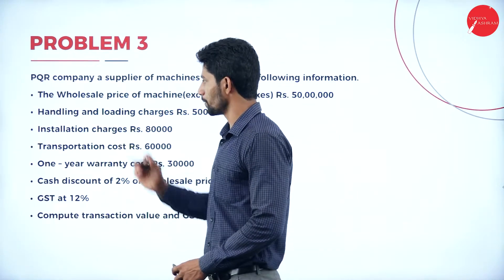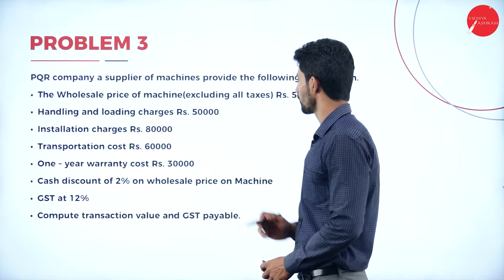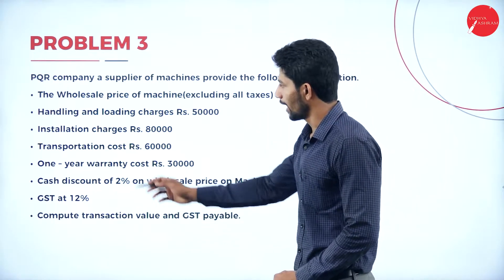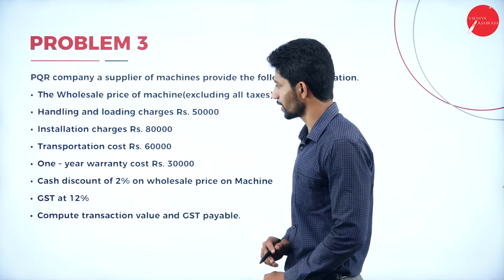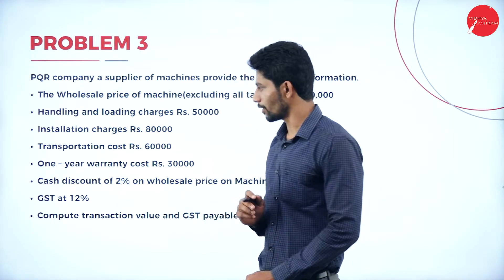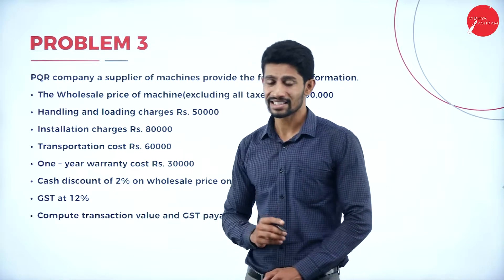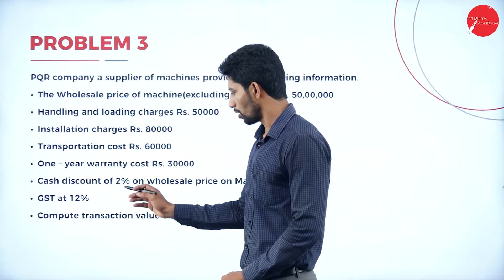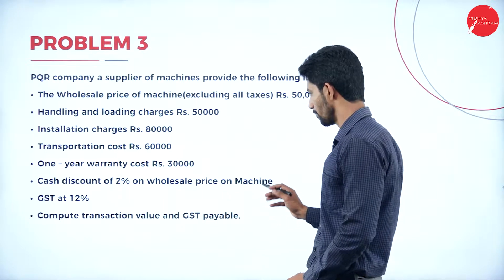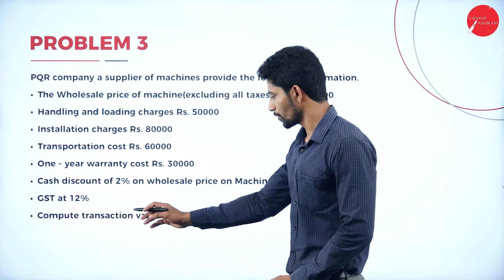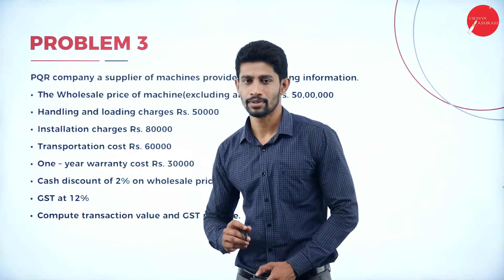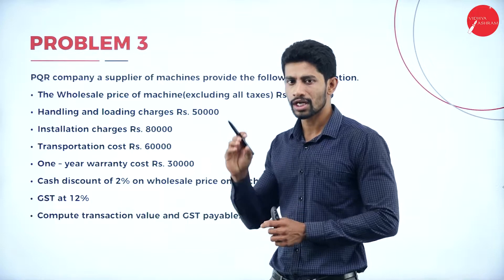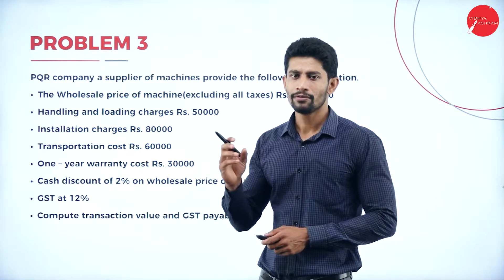Problem number 3: PQR company, a supplier of machines, provided the following information. The wholesale price of the machine excluding all taxes is Rs. 50 lakhs; handling and loading charges Rs. 50,000; installation charges Rs. 80,000; transportation cost Rs. 60,000; one year warranty cost Rs. 30,000; cash discount of 2% on wholesale price; GST at 12%. Compute transaction value and GST payable. The total of transaction value and GST payable is called value of supply.